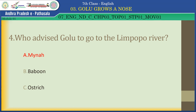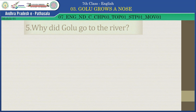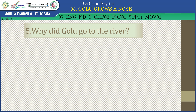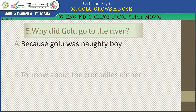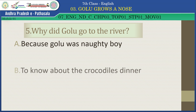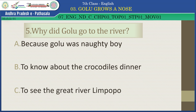Question number 5: Why did Golu go to the river? Option A — Because Golu was a naughty boy. Option B — To know about the crocodile's dinner. Option C — To see the great River Limpopo. Well done, children — you remembered very well. The answer is Option B: to know about the crocodile's dinner.